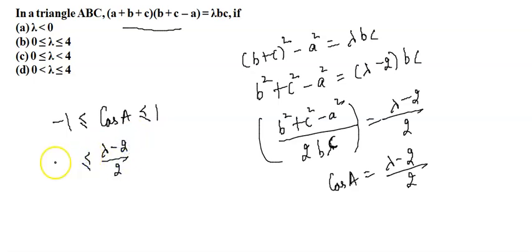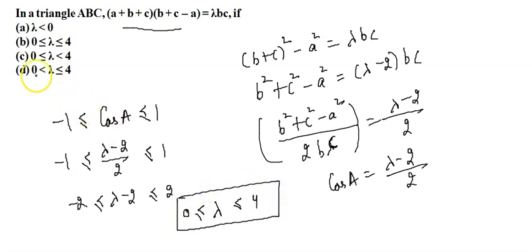And again, we know that cos A lies between minus 1 and 1. That means lambda minus 2 by 2 will lie between minus 1 and 1. So lambda minus 2 will lie between minus 2 and 2. That means lambda will lie between, if I add 2 to both sides, it will be 0 and 4.